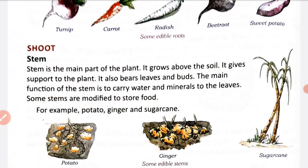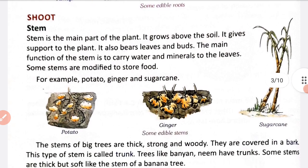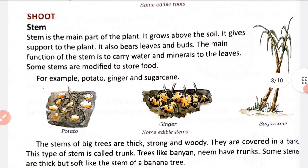Now the second main part is shoot. Shoot ke sub-parts hain: first is stem. Stem is the main part of the plant. As you know, stem plant ka main part hai jo ki plant ko support karta hai aur yeh soil ke oopar paaya jata hai.